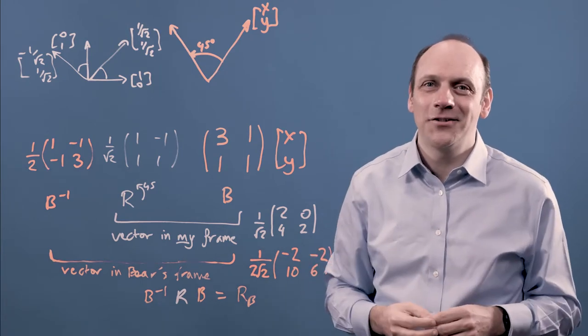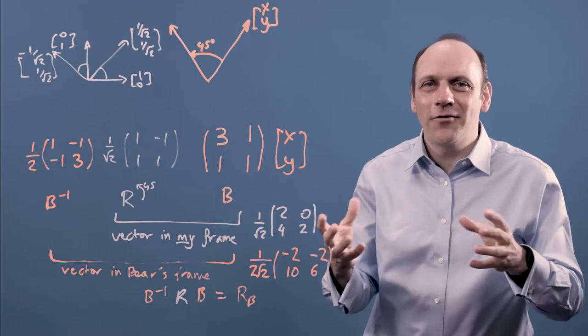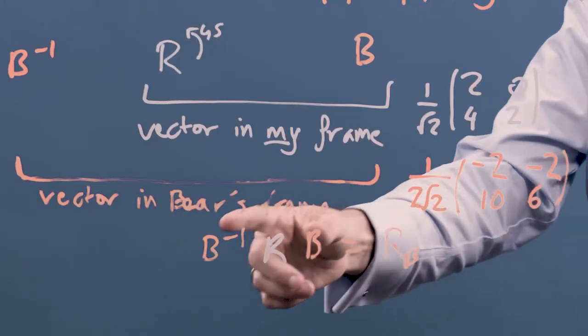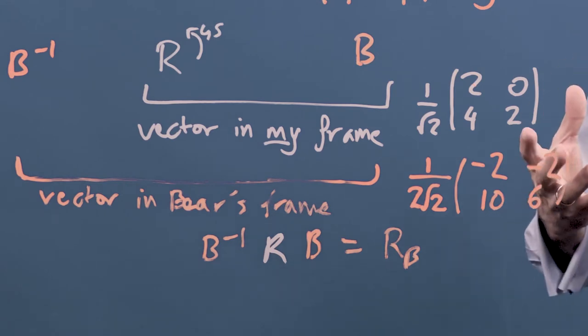You have to do the calculation. So if you want to do some kind of transformation but in some funny basis, this equation B to the minus 1 RB is going to be very useful.